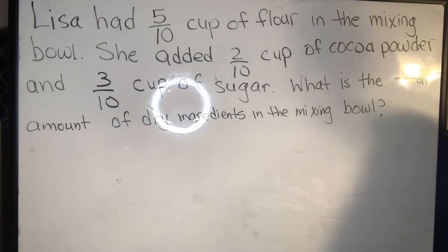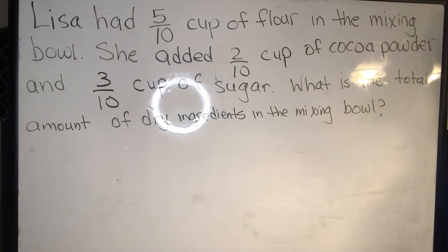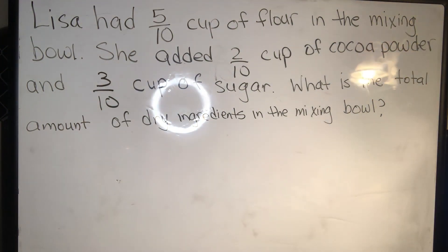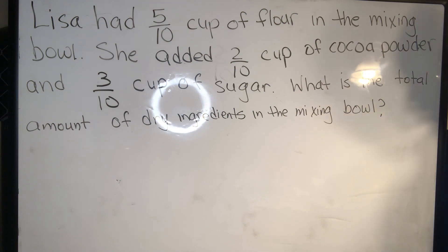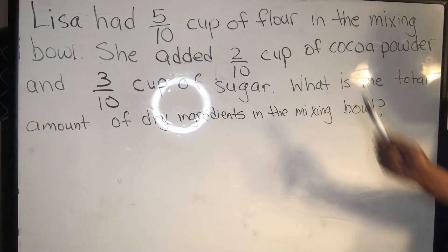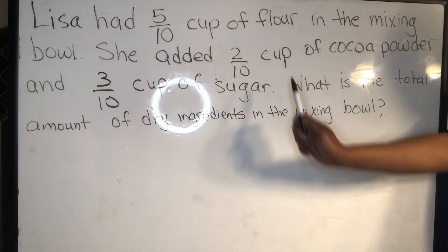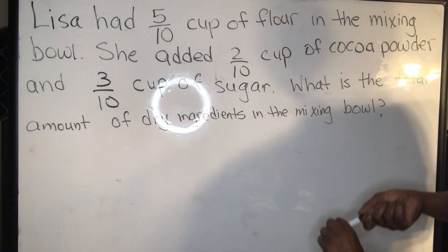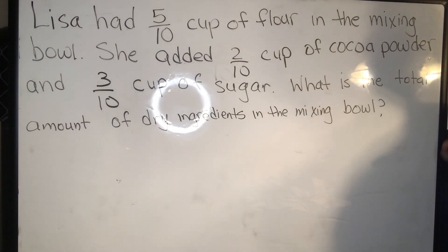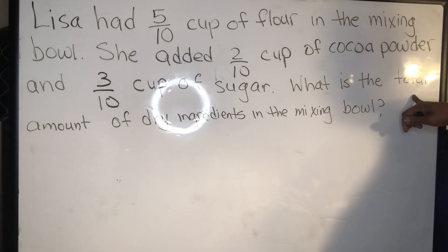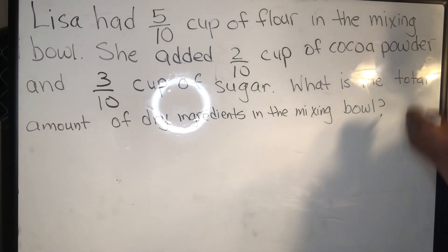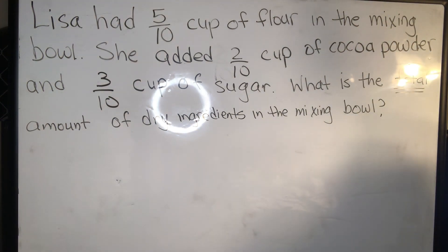Lisa had five-tenths cup of flour in the mixing bowl. She added two-tenths cups of cocoa powder and three-tenths cup of sugar. What is the total amount of dry ingredients in the mixing bowl? We're going to look at our fractions and we see we have five-tenths, two-tenths, and three-tenths. We see all of them have the same denominator — tenths. So we already know that we can add. When it says 'what is the total?' — that means add. That's your key word.